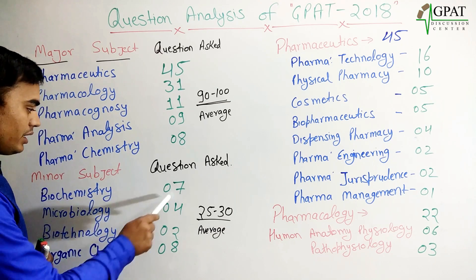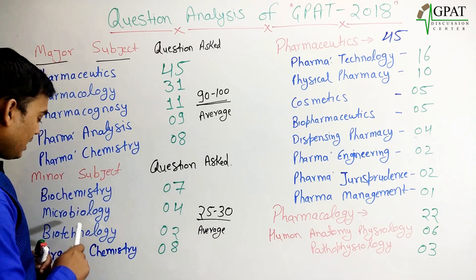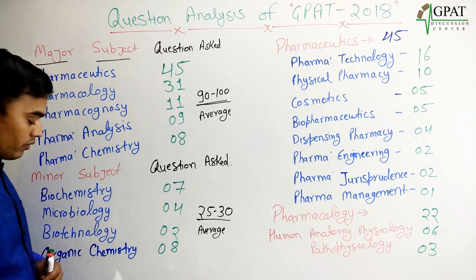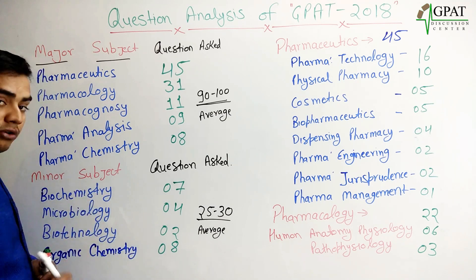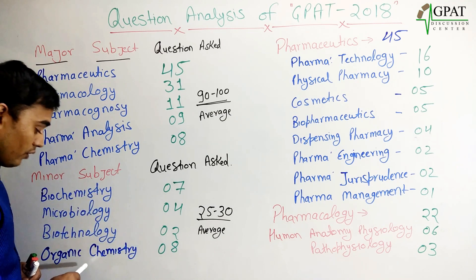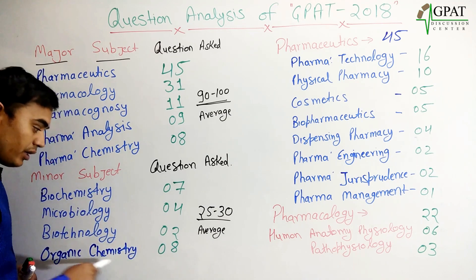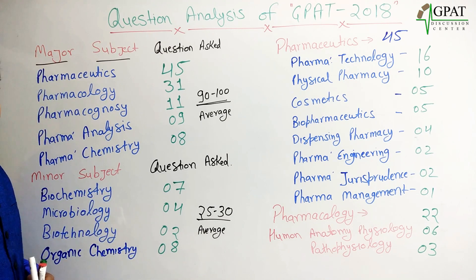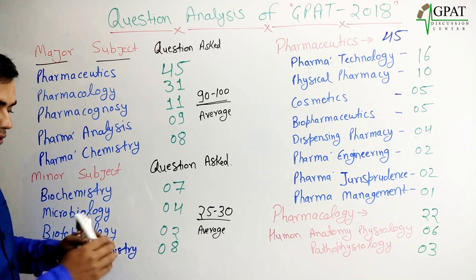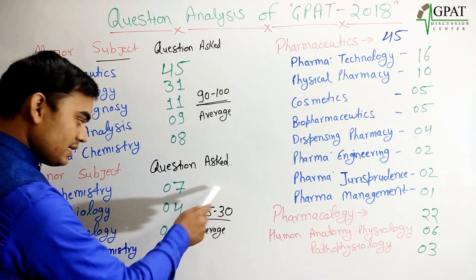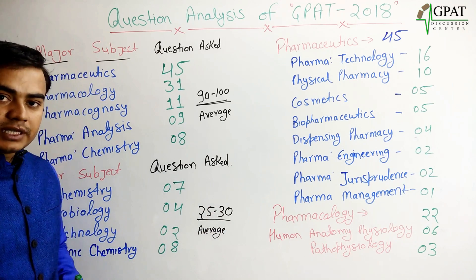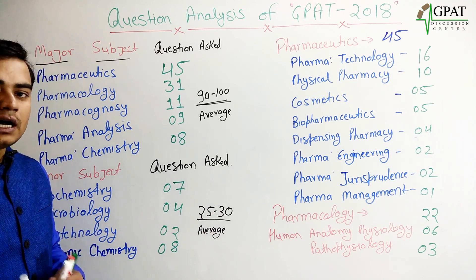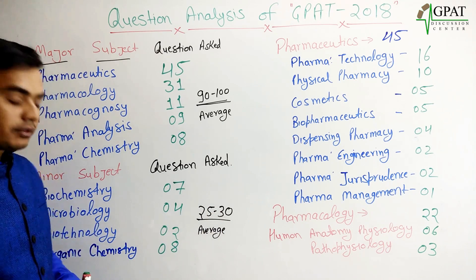From biochemistry, 7 questions were asked. Microbiology, 4 questions. Biotechnology, 2 questions. And from organic chemistry, 8 questions were asked. So on average, each year, from the minor subjects, 25 to 30 questions are asked.